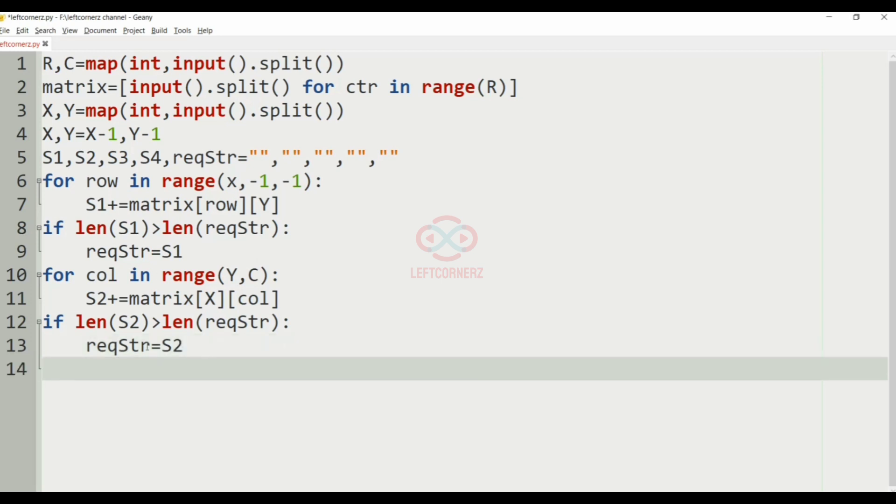And now our next loop, that is row in range X comma R. Before that, S3 will be incremented with matrix of row and Y.